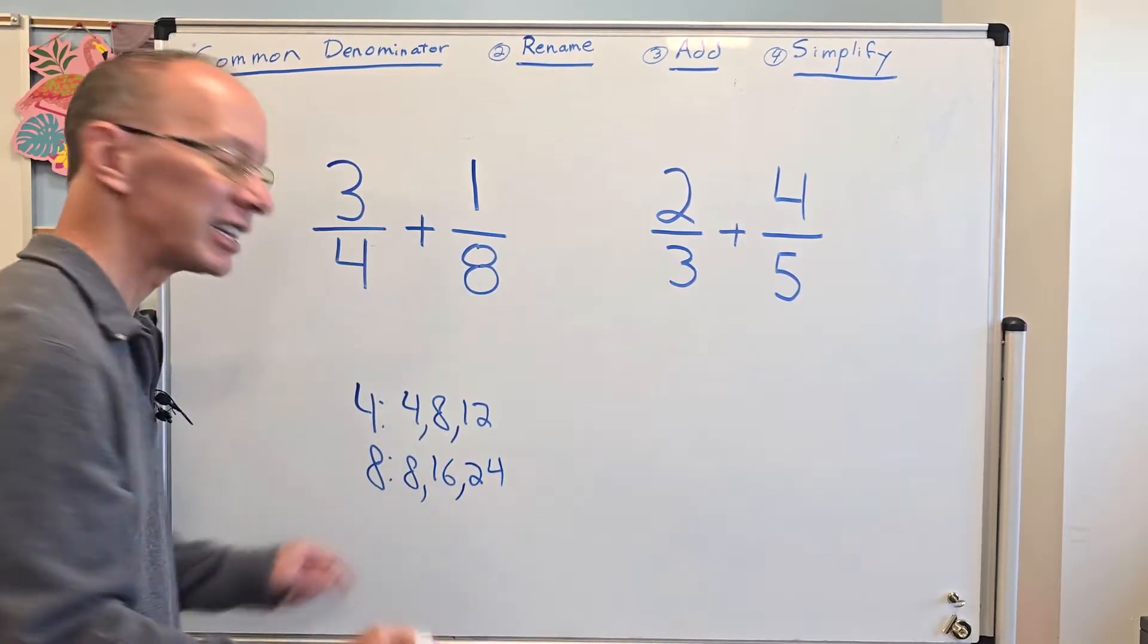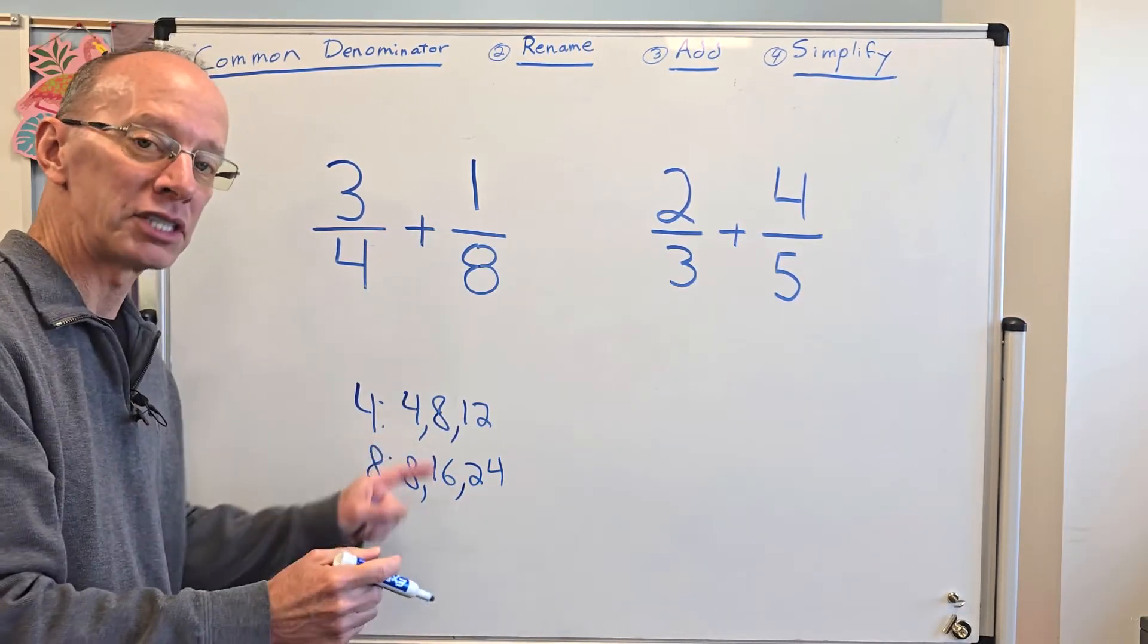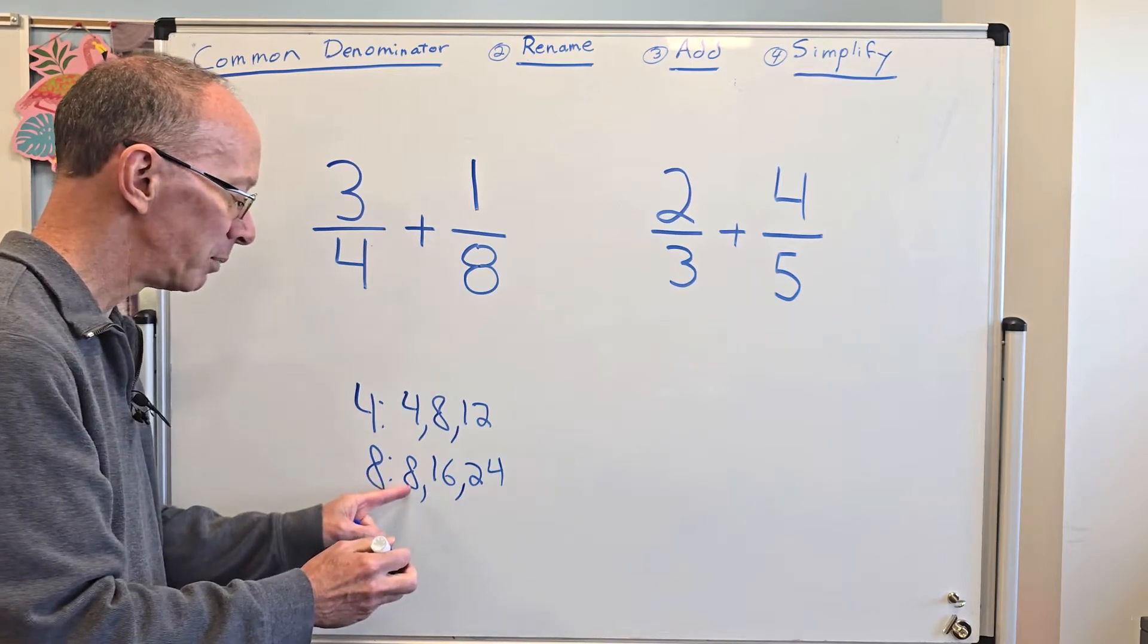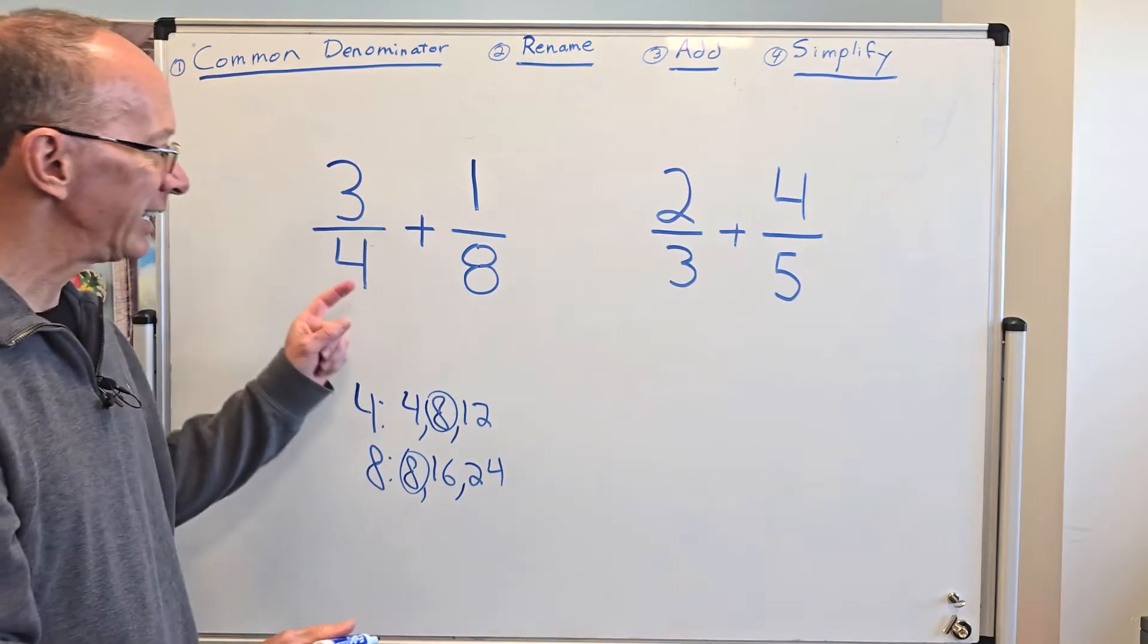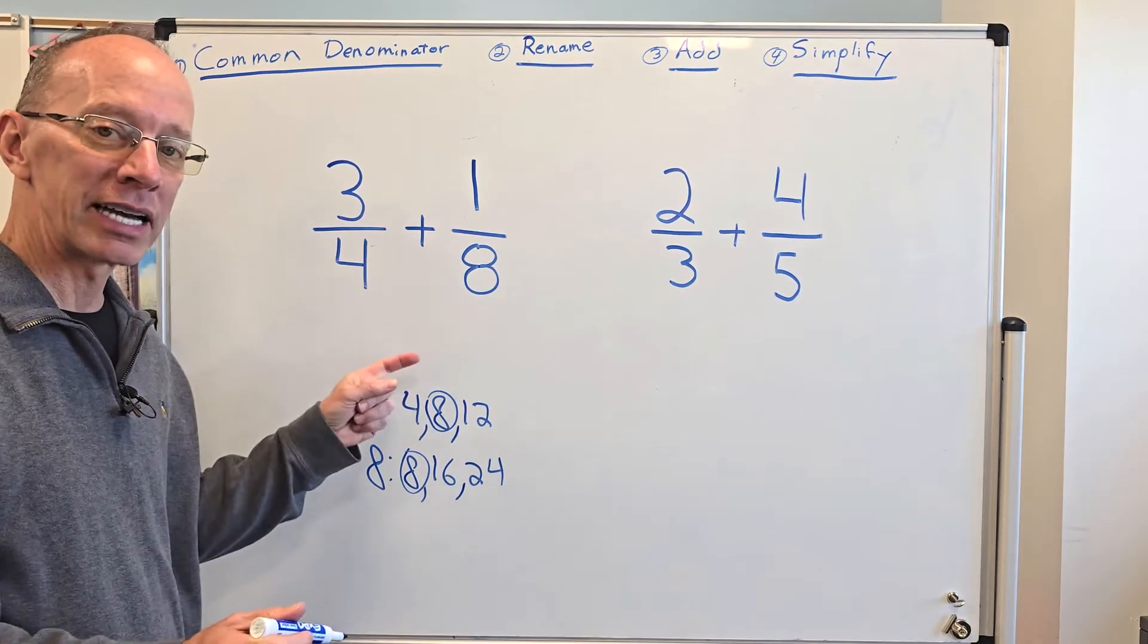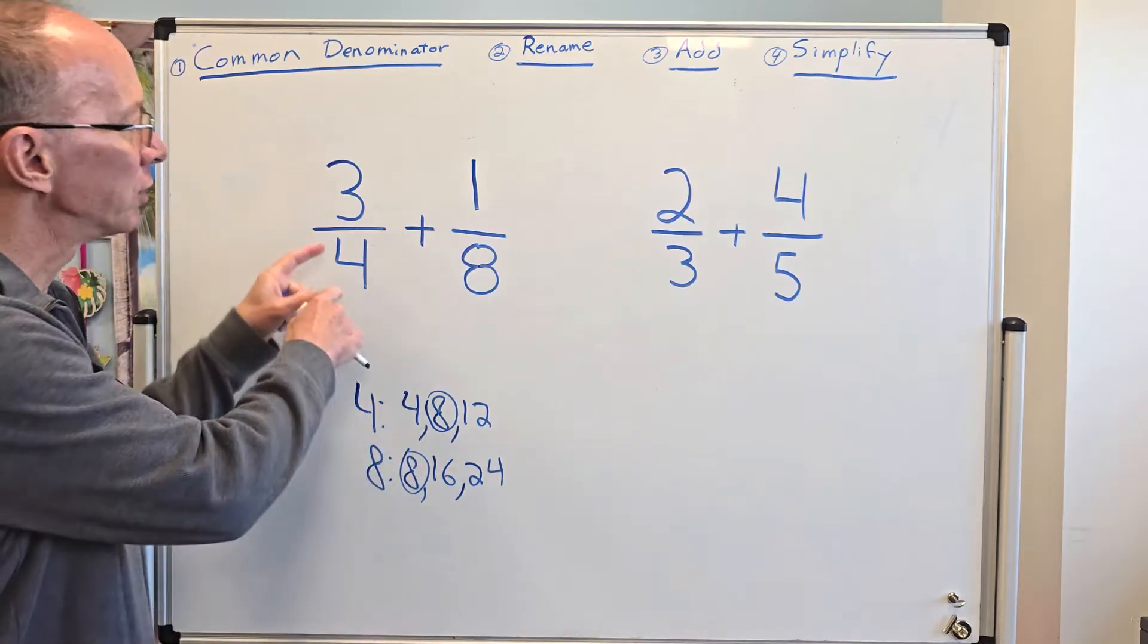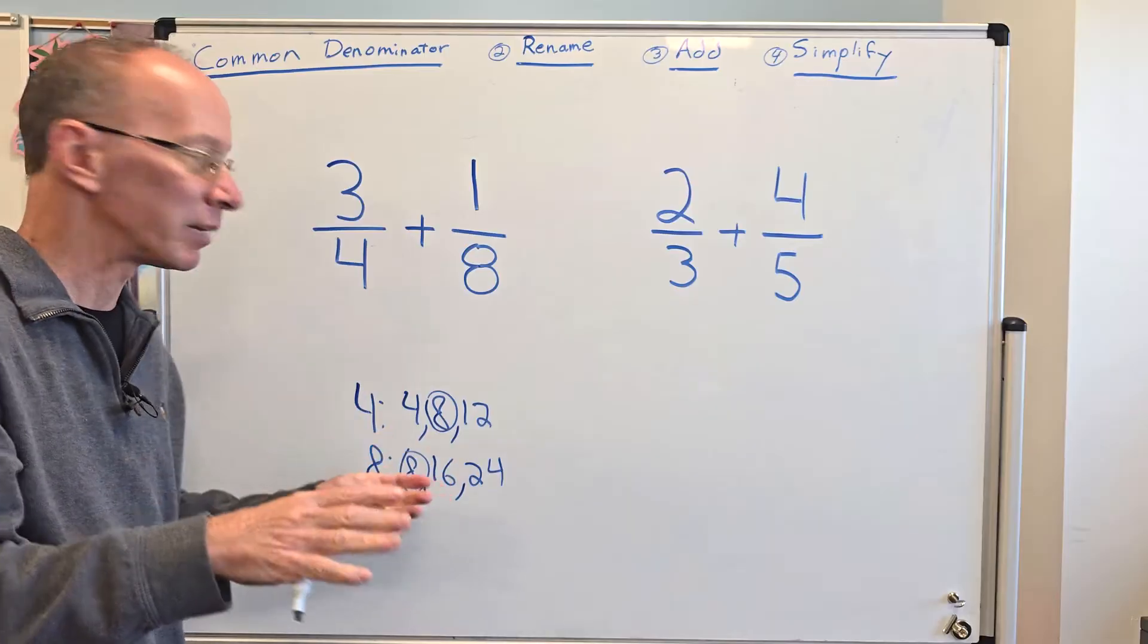So I look for the least common multiple, the smallest number that they both share in common. And that would be the eight. So I'm just going to go ahead and circle that. And so I need to make the denominator eight so that they both share that in common.